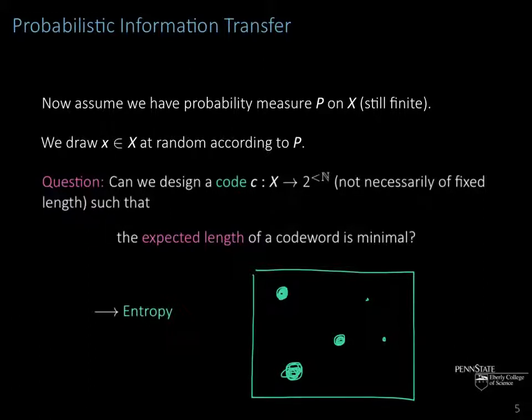In this example, we would assign shorter code words to the events or elements with higher probability because they are more likely to be chosen and transmitted more often, whereas elements with small probability would receive longer code words. These considerations lead us precisely to the notion of entropy. One way to arrive at entropy is through probabilistic transfer of information and designing codes that minimize the expected length of a code word.